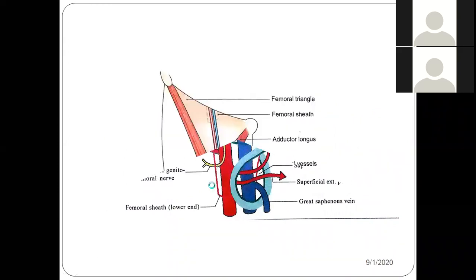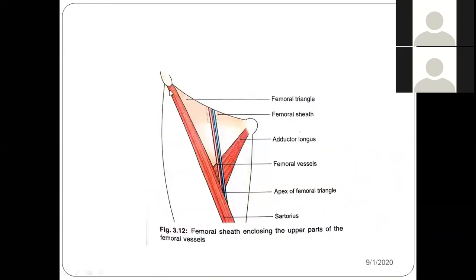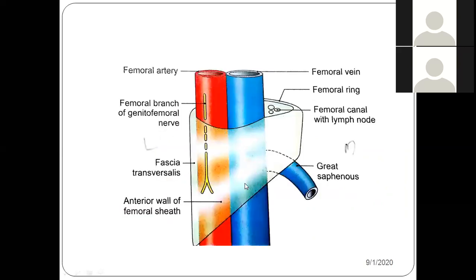As the student was telling us, the boundaries of the femoral triangle: base is the inguinal ligament, medially we have the medial border of adductor longus, laterally the lateral border of sartorius. The apex is the meeting point of these two muscles. The upper three to four centimeters of the femoral vessels is enclosed by the femoral sheath.